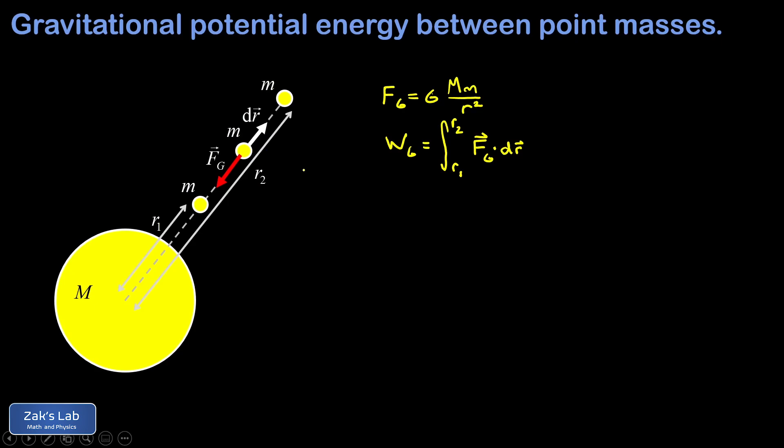Notice that the force of gravity is in the opposite direction as dr here, and that means this dot product produces a minus sign. Because these two vectors are anti-parallel, the dot product turns out to have a magnitude that's just equal to the magnitude of each vector multiplied. But the minus sign is produced by that cosine of 180 degrees because they're pointing in the opposite direction.